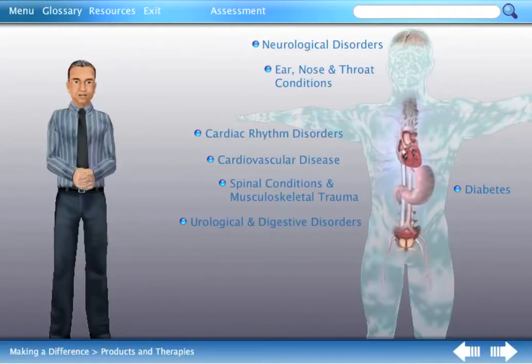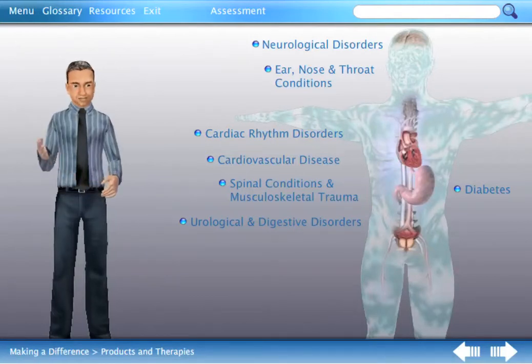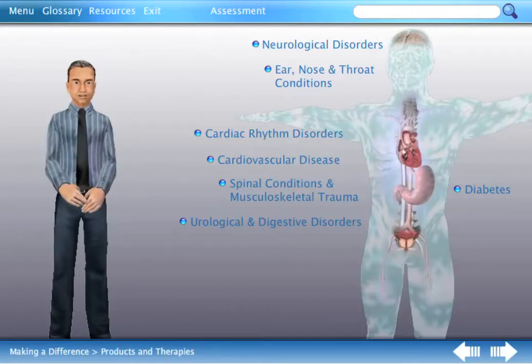Medtronic products and therapies cover these major conditions, and while this is extremely impressive, what really sets us apart from other medtech companies is how we treat chronic diseases. Click Neurological Disorders to learn more.